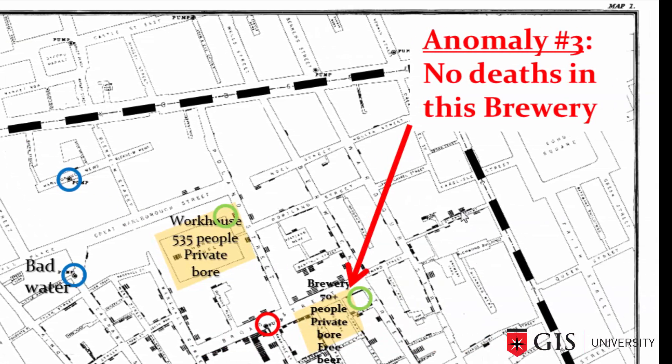The third anomaly: there were no deaths in a brewery located very close to the Broad Street pump. It turned out the brewery also had its own private bore, so everyone there was drinking from that. But not only that, the brewery had a free beer policy. In that era, it was often safer to drink beer than water, because making beer requires boiling the water to sterilize it, and the alcohol provides an additional sterilizing effect.